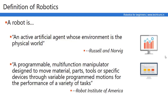According to the Robot Institute of America, a Robot is a Programmable Multifunctional Manipulator designed to move materials, parts, tools, or specific devices through variable programmed motions for the performance of a variety of tasks. This means a Machine which is programmable, multifunctional, and which can handle materials, parts, tools, or specific devices — and by just changing the programming, it can perform a variety of tasks.